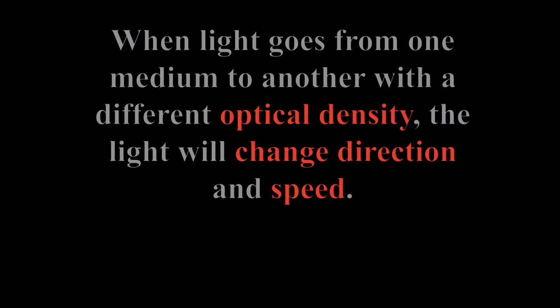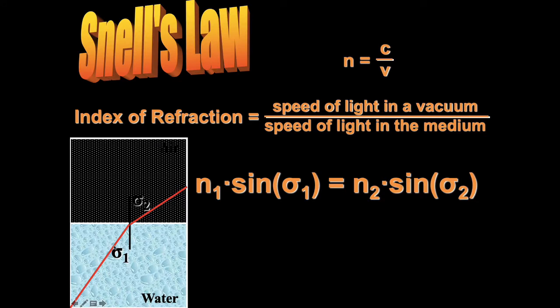We learned in the last lesson that when light goes from one medium to another with a different optical density, the light will change speed. Light will also change direction in most cases. Snell's Law gives us a mathematical relationship between the angle at which a ray of light exits a medium and enters another medium.